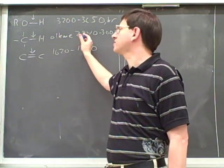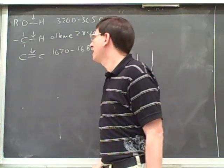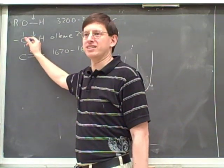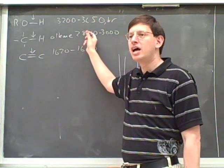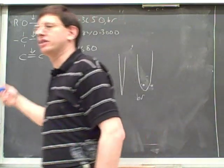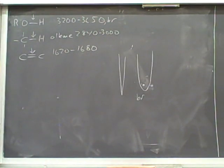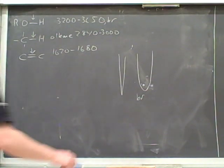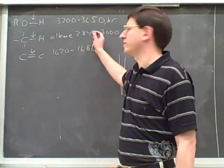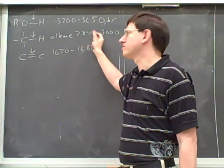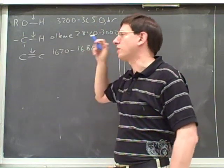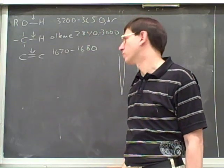I wanted to mention these just to point out that these are not very helpful, because almost any compound has some alkane bonds. So almost any compound will have some absorptions in this region. One thing to keep in mind for IR is there's no integration — you can't tell how many bonds are represented by each absorption. If you see an absorption, that tells you a functional group, but not how many of that functional group. So you can pretty much ignore the absorptions a little bit below 3,000, because pretty much any molecule will have absorption in that range.